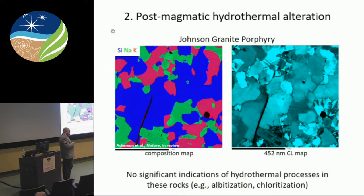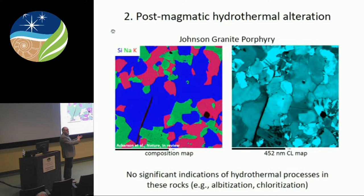Another idea harks back to the granitization versus magmatism controversy Tuttle and Bowen were mixed up in 60 years ago — the notion that you can recrystallize these rocks entirely through kinetic recrystallization. But where we have clearly defined crystallization patterns in these rocks, you'd expect smearing of boundaries with kinetic recrystallization. We don't see anything like that. The zoning is pristine; for all intents and purposes it is magmatic crystallization from a fluid.